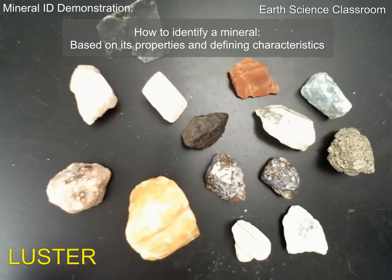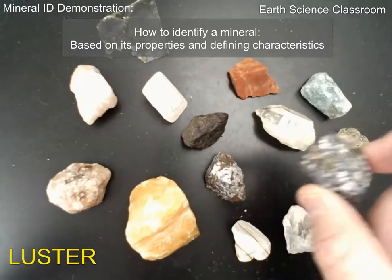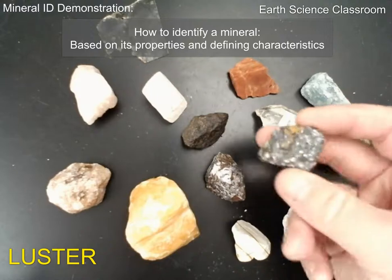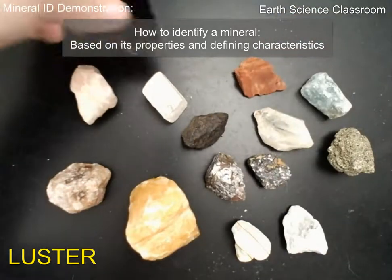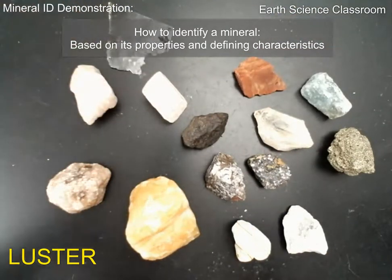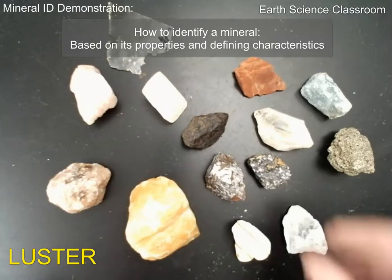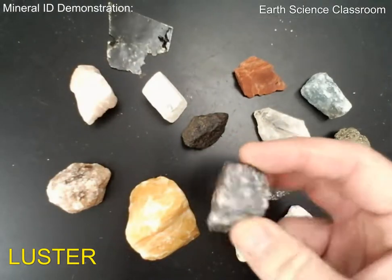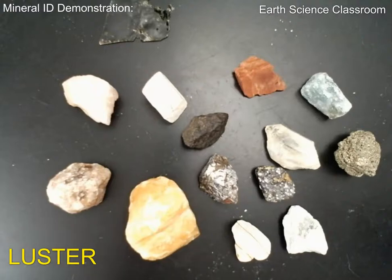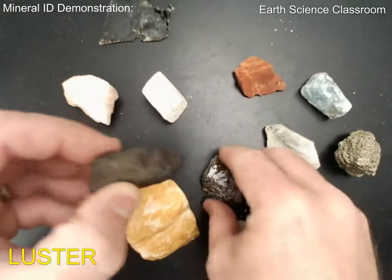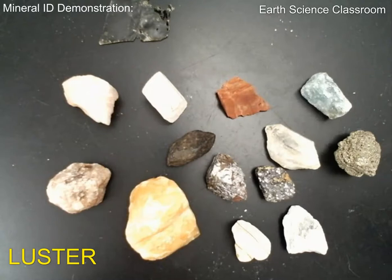The next property is luster — how light reflects off the surface of the mineral based on its habit, its shape, and its chemical composition. You have different subcategories of luster: metallic, sub-metallic, and glassy. It can also be oily, silky, dull, or earthy. A dull mineral is one where light is not really shining off — more absorption, giving a dull appearance.